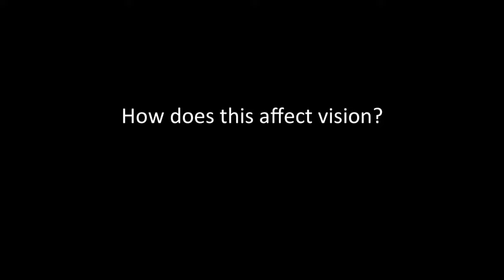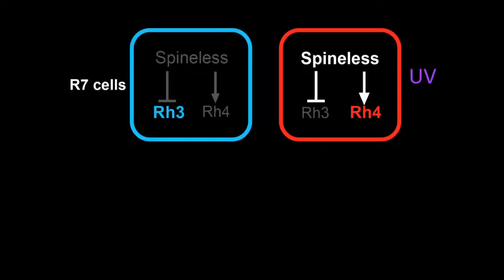We were wondering how this actually affects vision. Does it have a behavioral output? To get at this question, I told you before that the R7 cells express either rhodopsin 3 or 4. Both of these are UV-detecting proteins with overlapping spectra, so that makes it really hard to assay for any vision differences. Fortunately, we were able to take advantage of the fact that the R7 cell fate is coupled to the R8 fate.